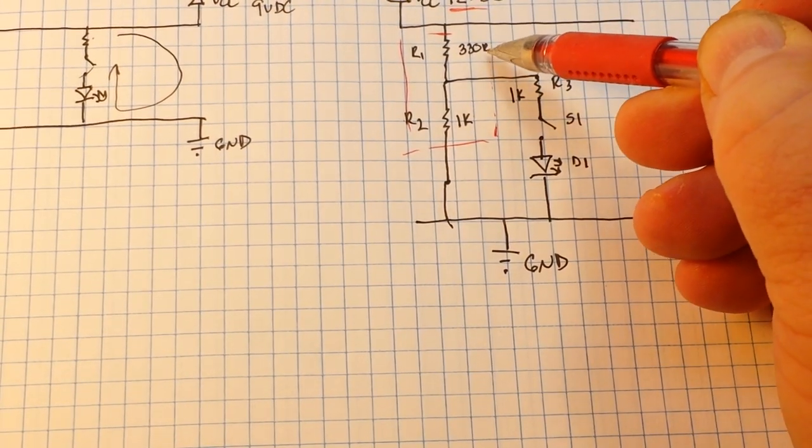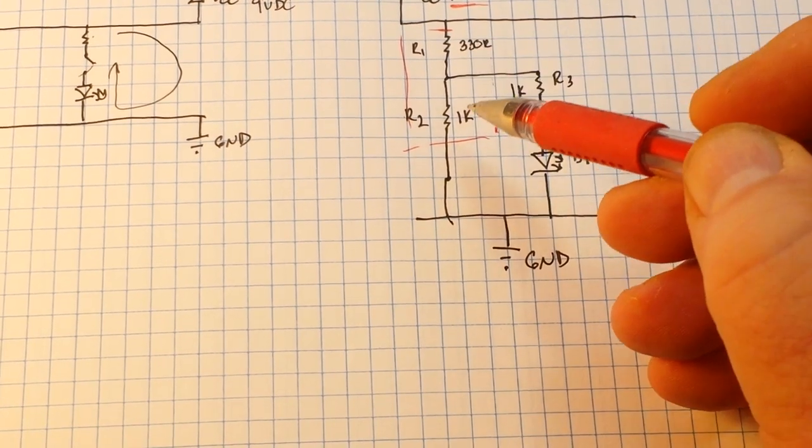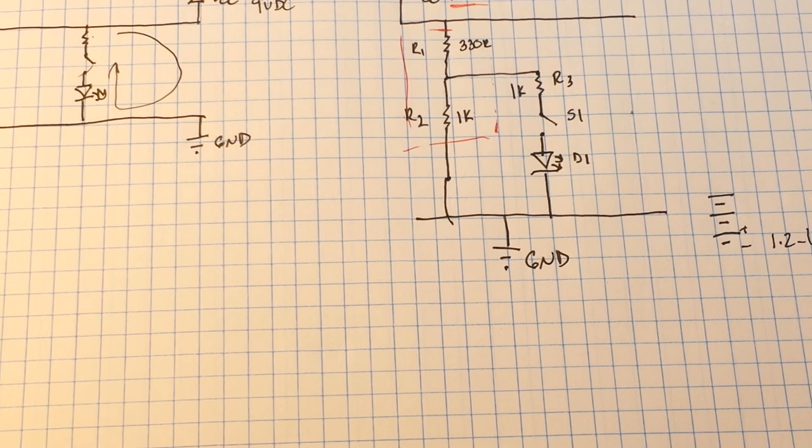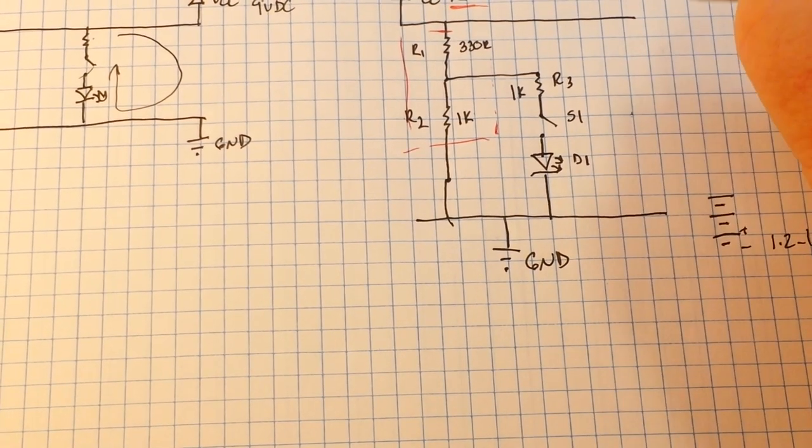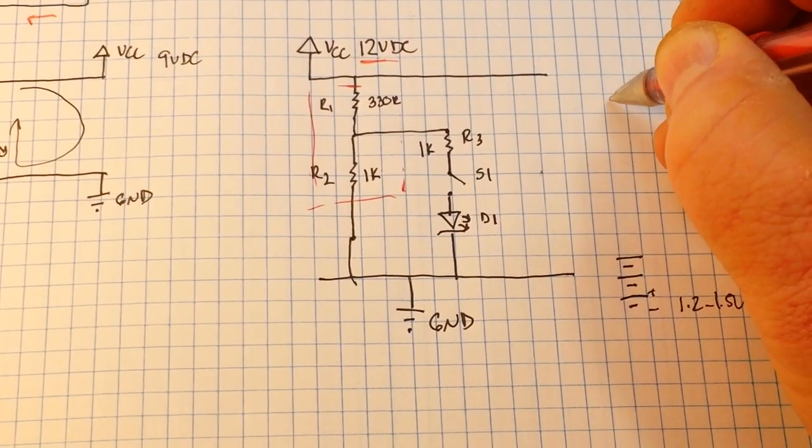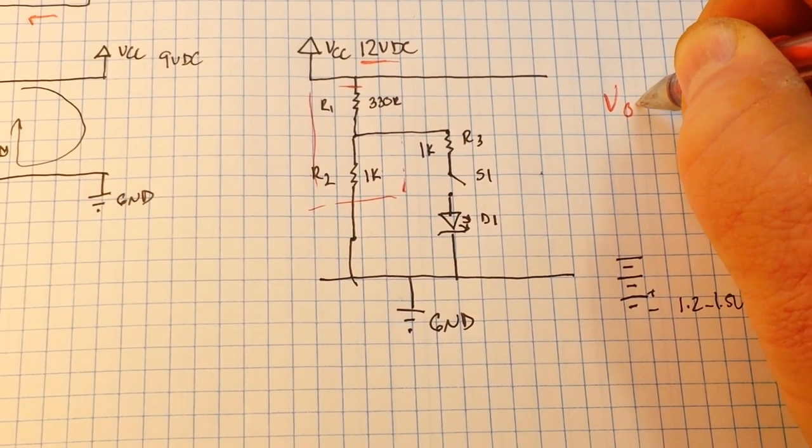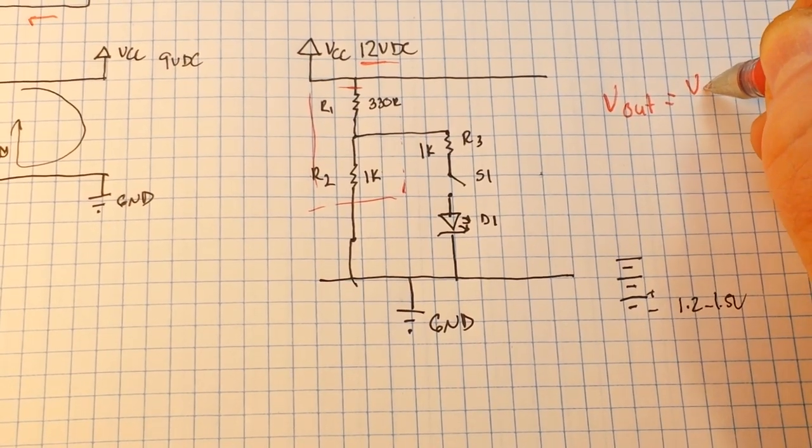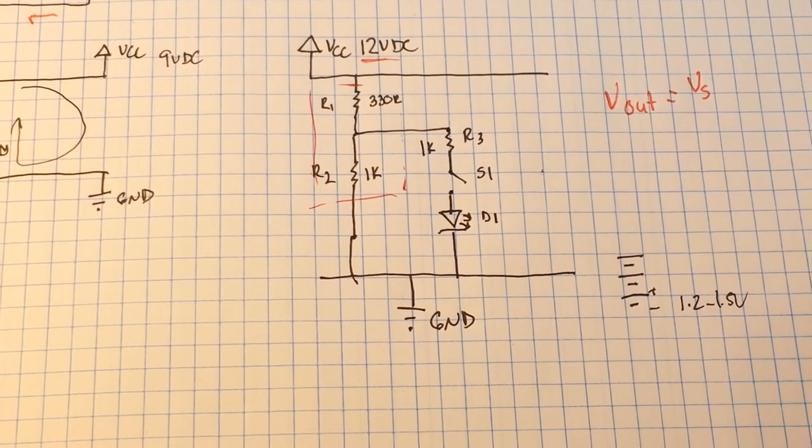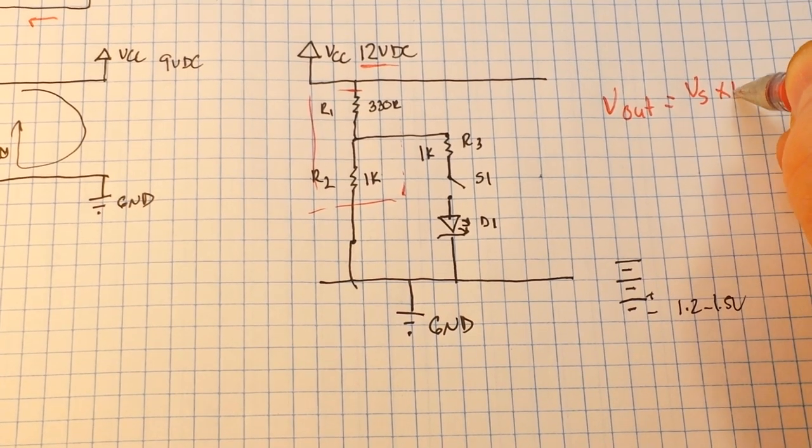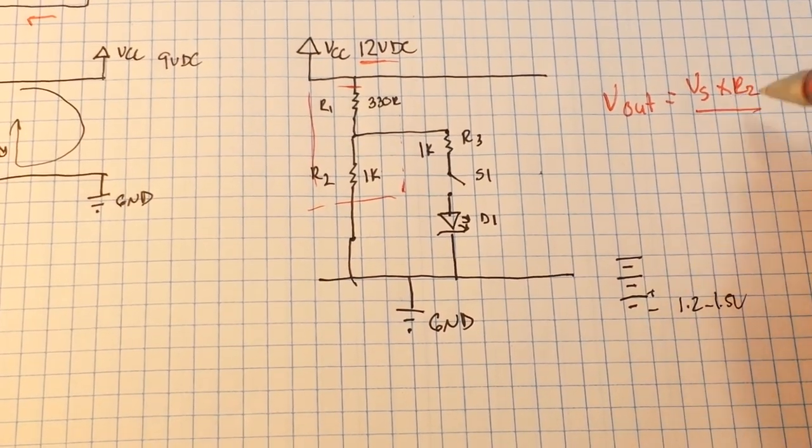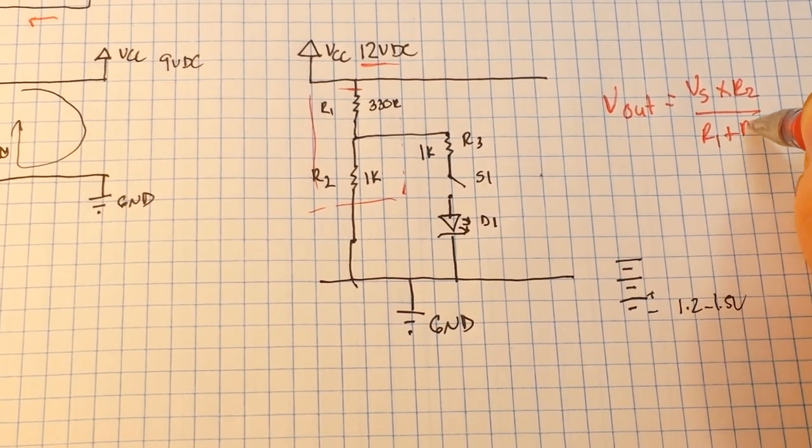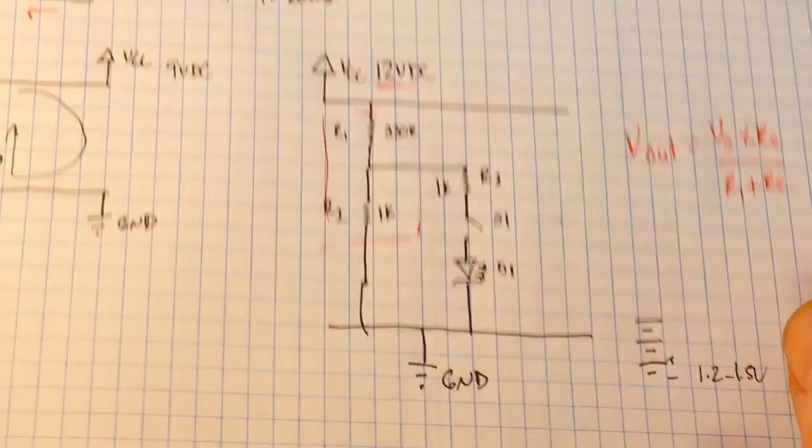So what we've done is we've created a voltage divider here to reduce that 9 volt - that 12 volts into 9 volts. And I've used a 330 ohm resistor and a 1k resistor, and that uses the voltage divider formula. And the voltage divider formula is V out is equal to the source voltage times R2 over R1 plus R2. Just in case you didn't know.